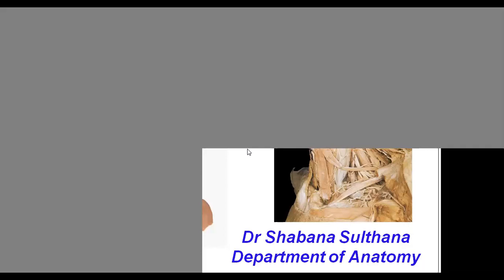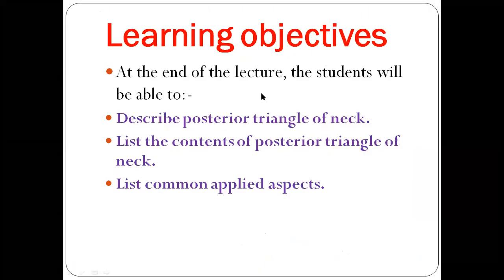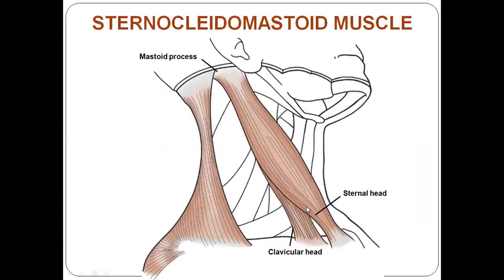Good morning dear students. We are going to discuss the posterior triangle of the neck. Sternocleidomastoid is the landmark muscle — in front of it we discussed the anterior triangle, and behind it we will discuss the posterior triangle. The learning objectives are: describe the posterior triangle, see its contents, and also see some common applied aspects.